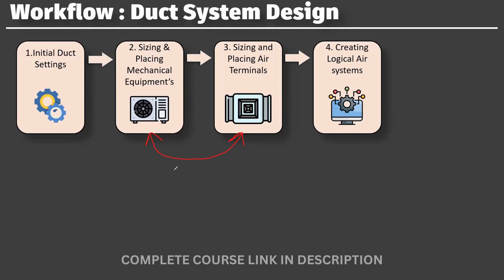Before this, you must understand the source and target relationship. All the mechanical equipment — it can be an AHU, FCU, or FAHU — comes into the category of source. All the air terminals — it can be a diffuser, a grille, a register, sidewall diffuser, or disk valve — any kind of air terminal will come under the category of target.